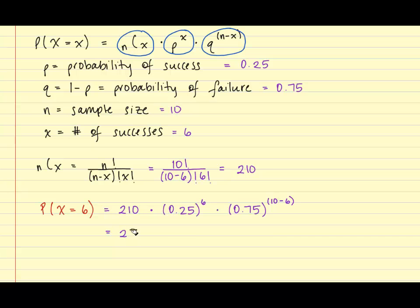So let's simplify this even further. 210 times 0.25 to the sixth power is 0.00024414. And then I have 0.75 to the quantity of 10 minus 6 power. So we're going to simplify 10 minus 6, and 10 minus 6 is 4. So 0.75 to the fourth power is 0.31640625.